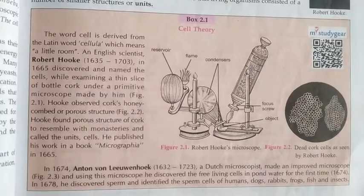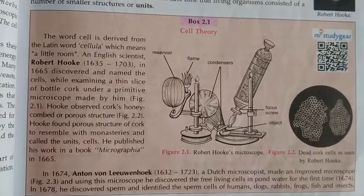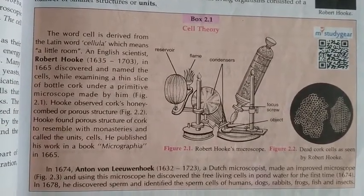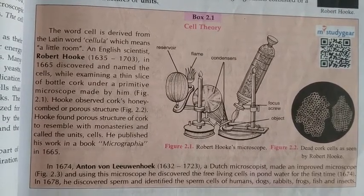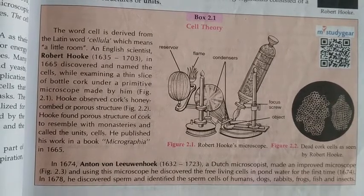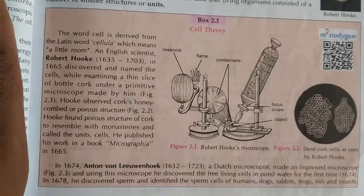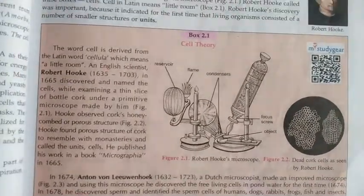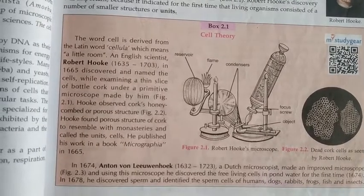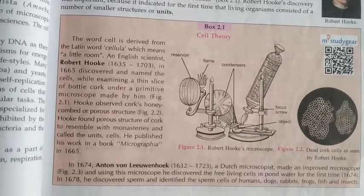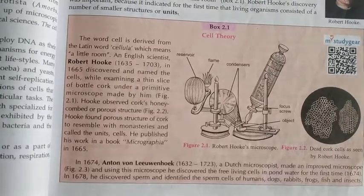Robert Hooke gave the name 'cell' to those structures he observed. Later, in 1674, a Dutch biologist Anton Leeuwenhoek designed a microscope similar to the one we use in our schools nowadays. This covers the discovery and basic information regarding the fundamental unit of life — the cell — and the differences between unicellular and multicellular organisms.